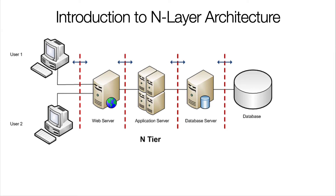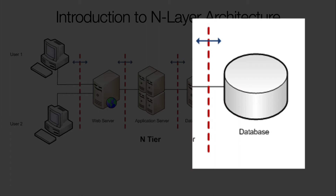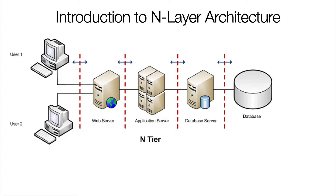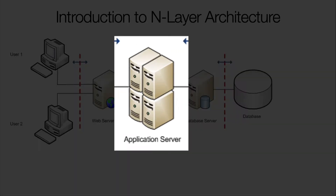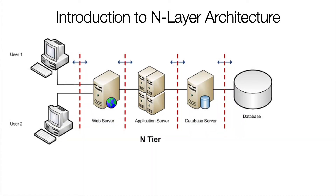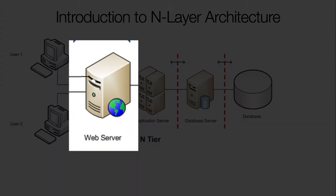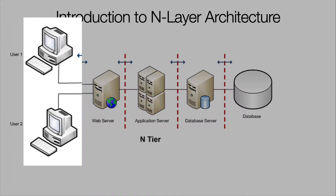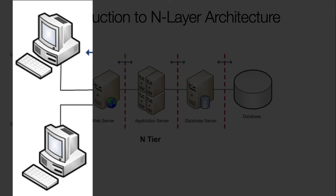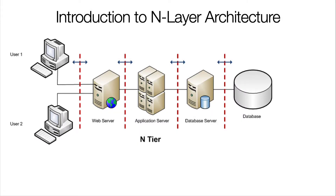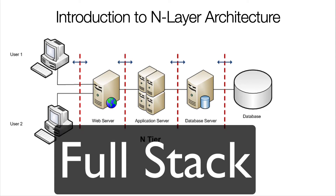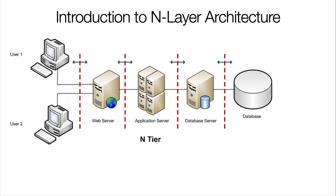Let's start at the right side. We assume that your application stores data somewhere, likely in a database, which is the bottom layer. Then we have application servers in the middle, where a lot of the logic of your program happens. And then we have the front-end view, which is the web server, connecting to clients — web browsers. Later in the other videos that follow, we're going to design an application that covers the full stack, using all the layers and connecting them.